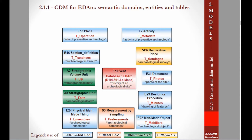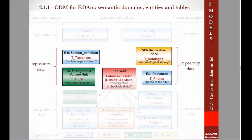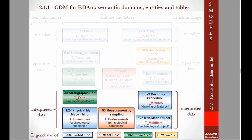In EDARC, eleven main tables have been chosen — those that describe archaeological data. The tables are: operation, metadata, trends, survey, stratigraphic units, facts, archaeological sites, sampling, object, design, and photo. These tables give information about the history of archaeological sites and documents, the metadata of the archaeological operation and its database, and the raw data recorded on site as well as data interpreted by archaeologists.